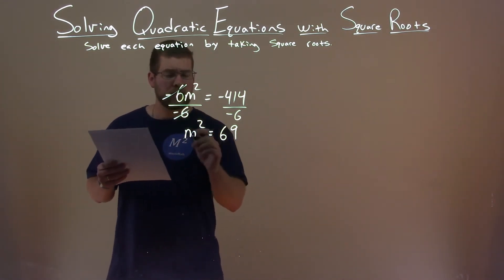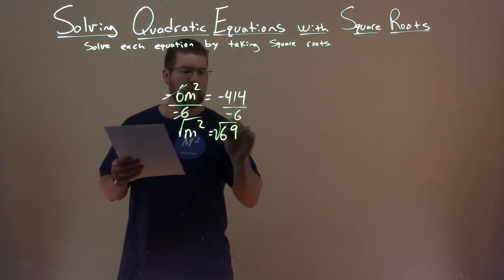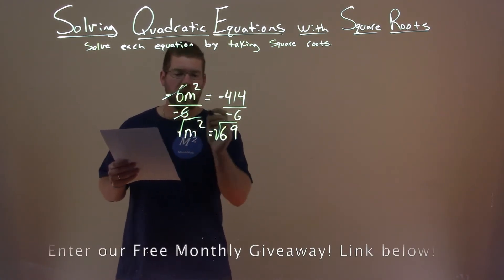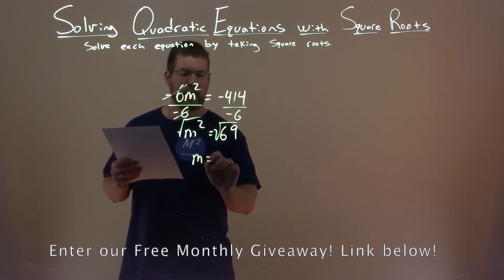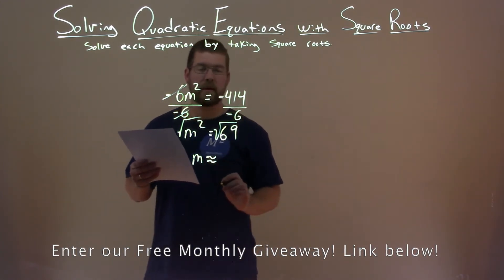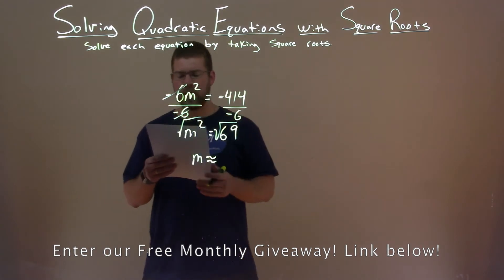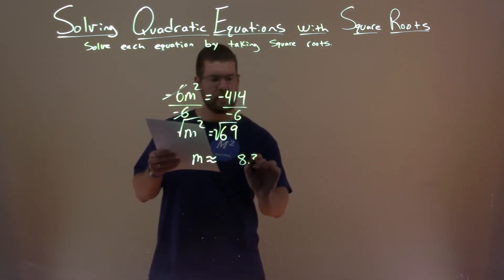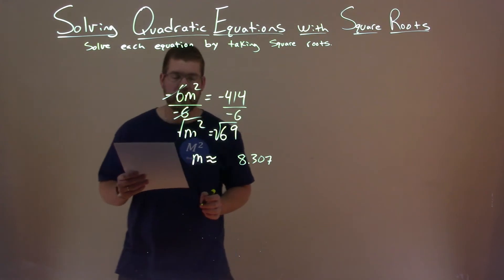Well, to get rid of the squared, I have to take the square root of both sides here. That cancels out the squared, leaving me m by itself, and this is actually going to be approximately. Okay, and the square root of 69 rounded is 8.307.